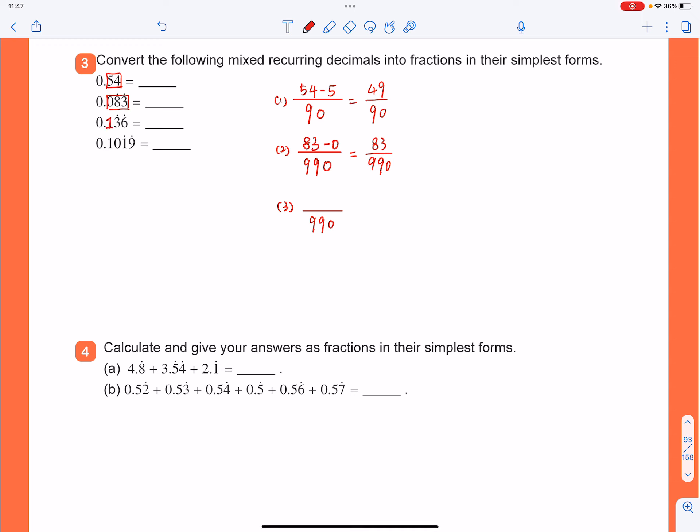So as for the numerator, you have to use all the numbers after the decimal point, which is 1, 3, 6. And then take away the non-recurring digit, which is 1. So you've got 135 over 990.